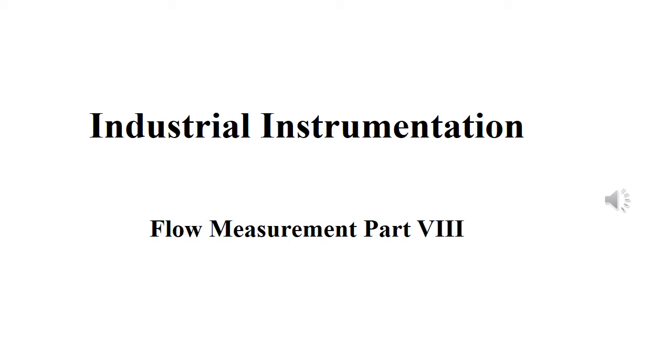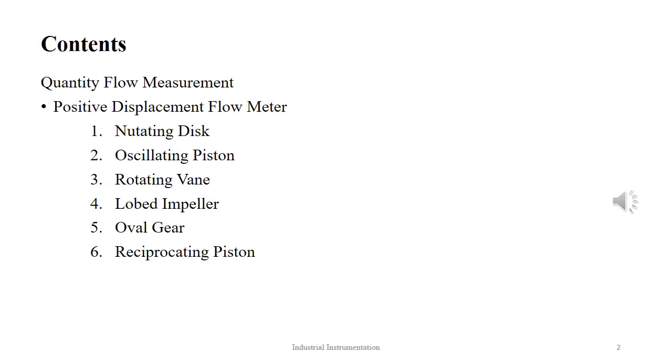In this tutorial on industrial instrumentation, we will talk about flow measurement part 8. The discourse covers positive displacement flow meters: nutating disc, oscillating piston, rotating vane, lobed impeller, oval gear, and reciprocating piston.